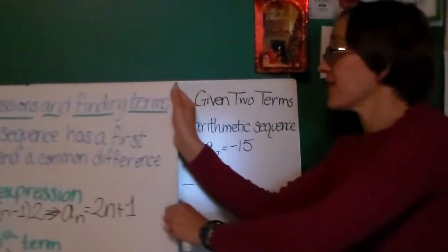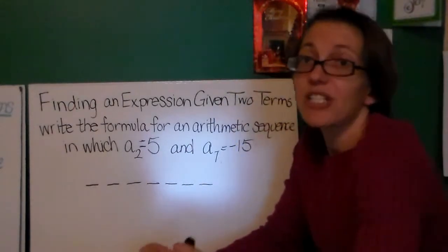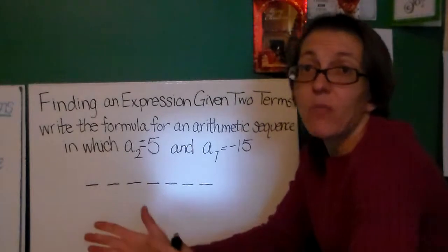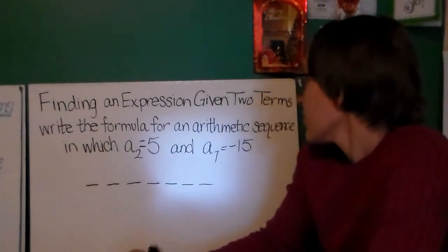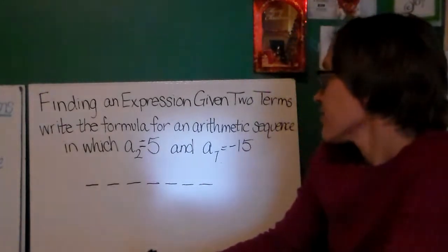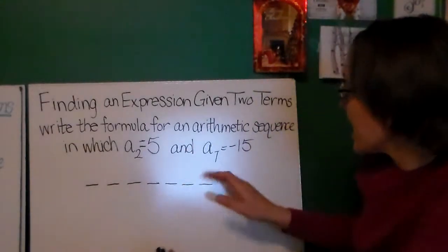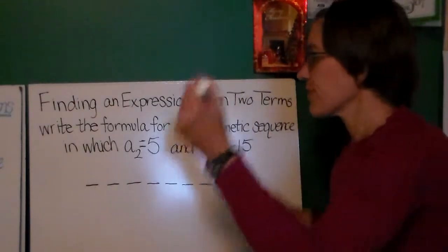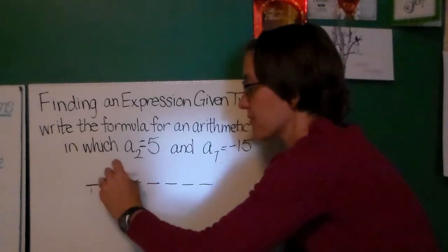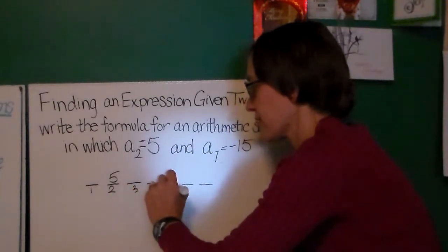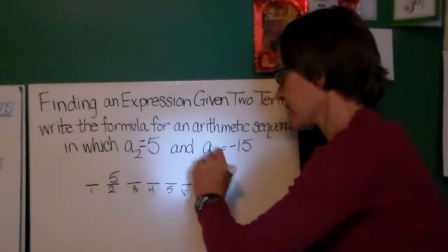So in that problem we were given information about the common difference and about the first term. A lot of times we're not. We're just given one or two or three terms somewhere in that arithmetic sequence. So let's talk about finding an expression where we're given just any two terms. Find the formula for an arithmetic sequence in which a sub 2 is 5 and a sub 7 is negative 15. So I've written seven little lines here. My first term I don't know. My second term is 5. My third, fourth, fifth, and sixth term I don't know. But my seventh term is 15.